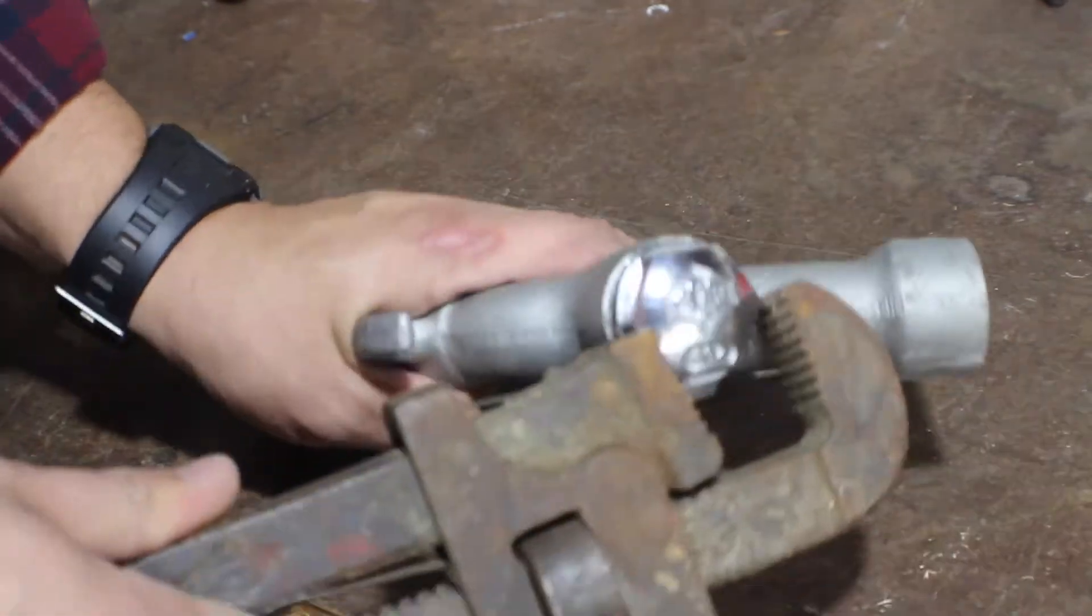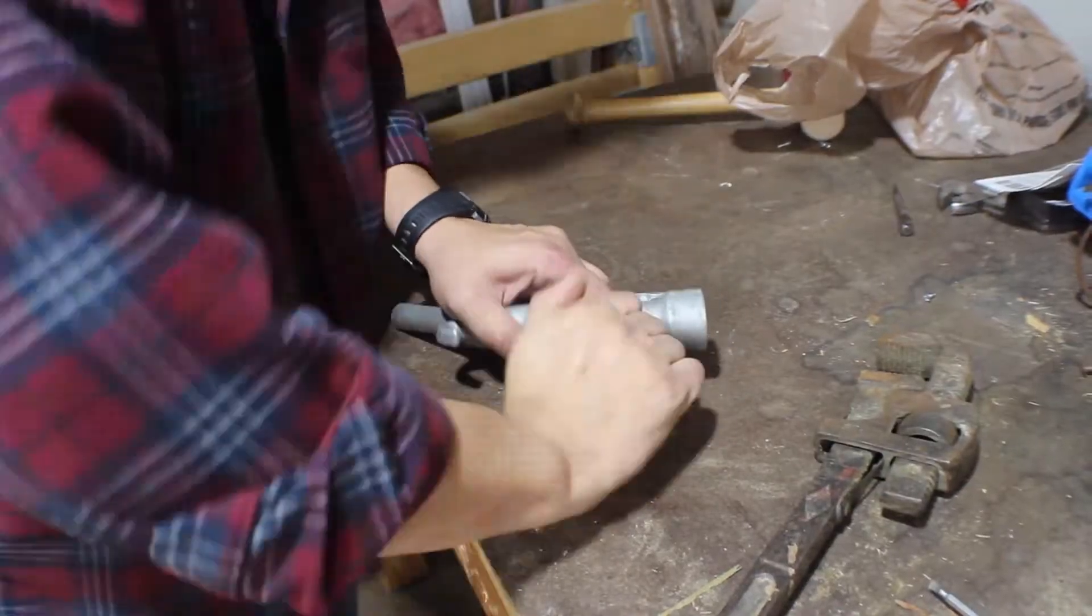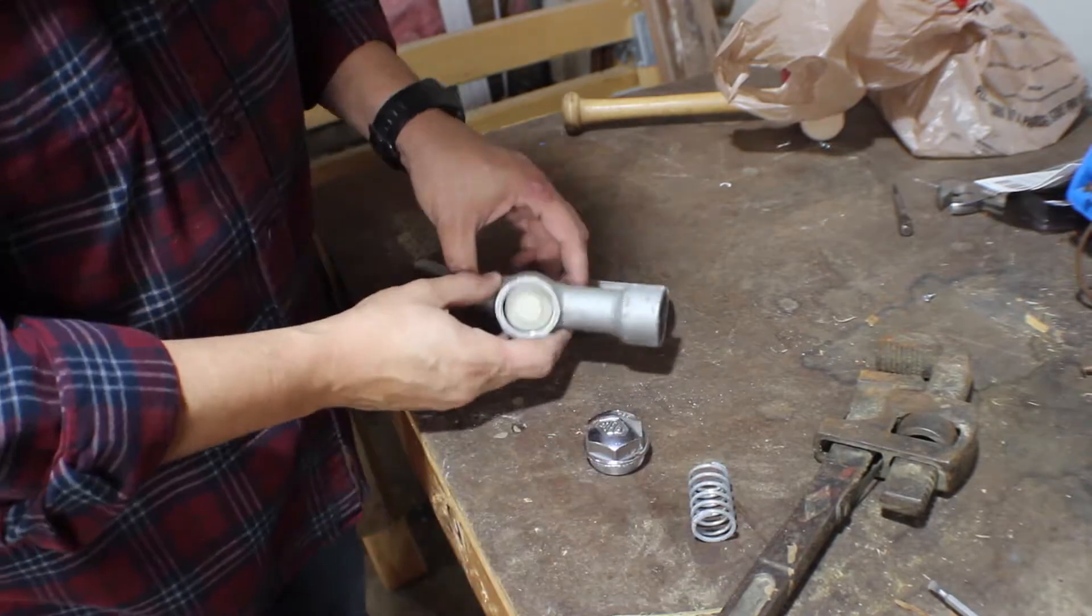The first step is going to be to take the valve out of this gas pump handle. I'm going to loosen up this big nut that's on the back of it, and I think I should be able to pull out the guts.